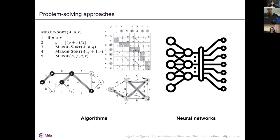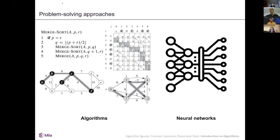In computer science, we care about solving problems, and there have been two broad ways to try and solve them. The first is the classical approach: we sit down with pen and paper and work out a list of instructions to solve a particular problem given certain assumptions about the input data. Examples include merge sort, various graph algorithms like shortest path, spanning trees — all written by hand.